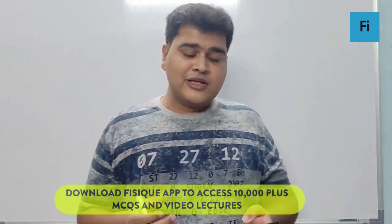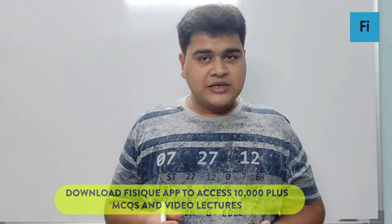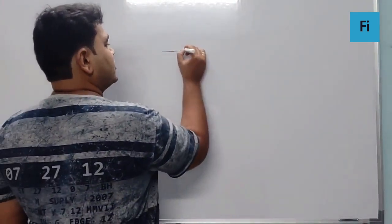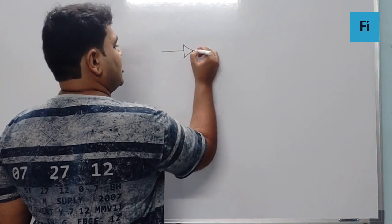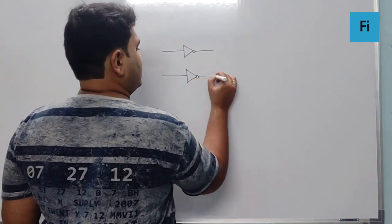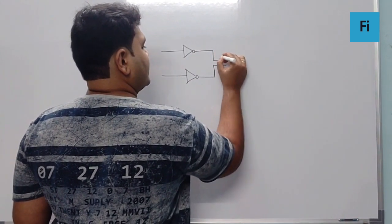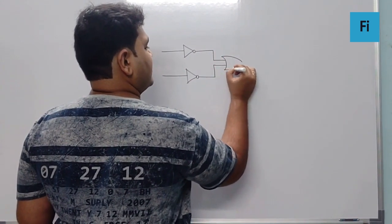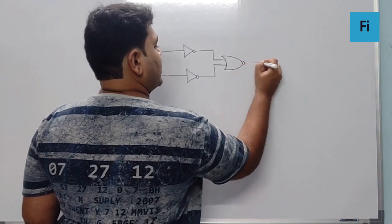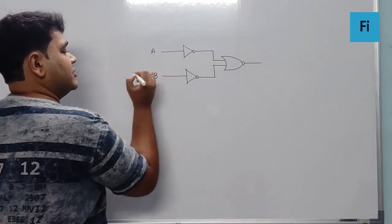The next question says, for the logic circuit shown, the truth table is. The circuit shown over here contains a NOT gate, another NOT gate. Both the outputs of the NOT gate are given to a NOR gate. The inputs are A and B, and the output is Y.